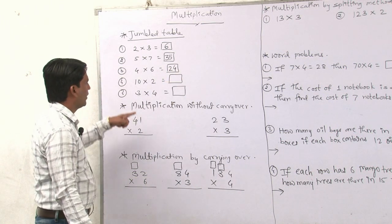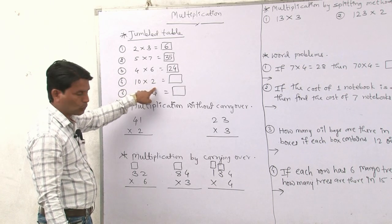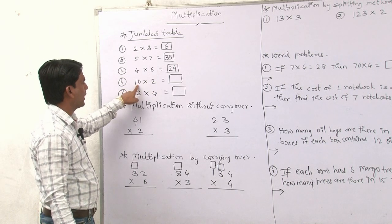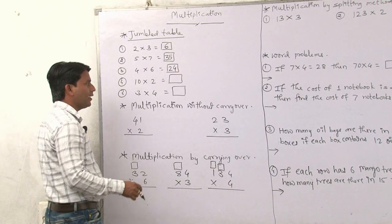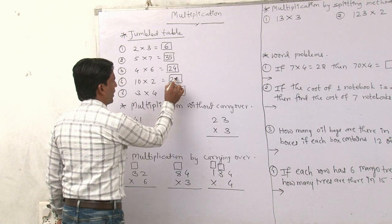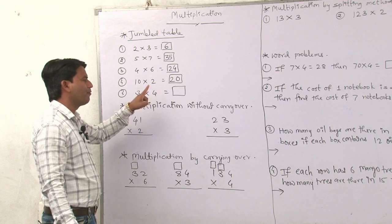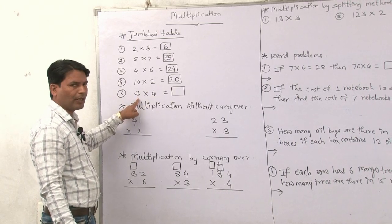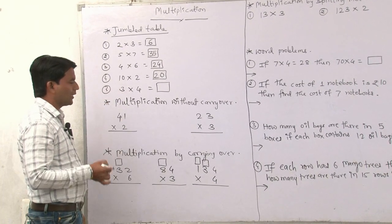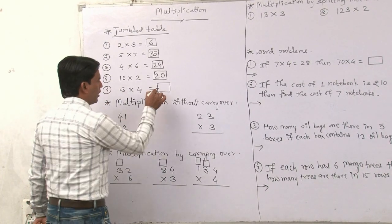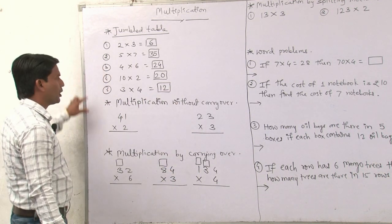After that we have to count the table of 10 till 2. 10 ones are 10, 10 twos are 20. And table of 3 up to 4: 3 ones are 3, 3 twos are 6, 3 threes are 9, and 3 fours are what? 12. Like this you can solve jumbled tables.